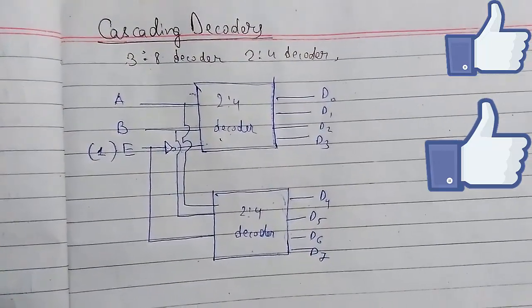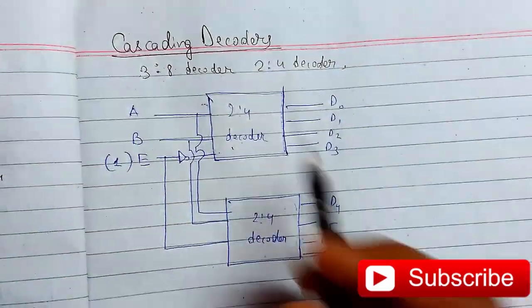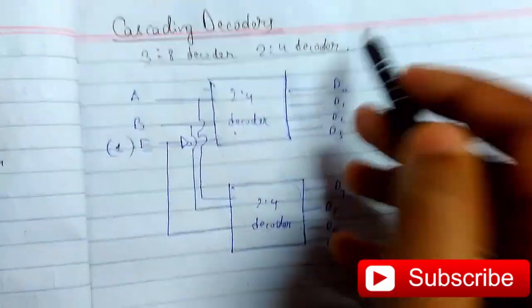Welcome back guys. Today we will be continuing combinational and arithmetic logic circuits. We will be seeing cascading of decoders. First we will be seeing 3-to-8 decoder using 2-to-4 decoder.